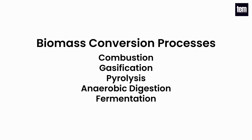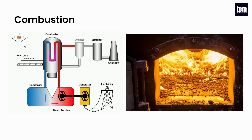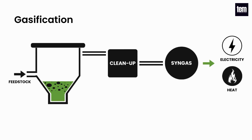The biomass feedstock must be converted to a useful energy form through one of many processes. Some common biomass conversion processes are combustion, gasification, pyrolysis, anaerobic digestion, and fermentation. Combustion is the process where biomass feedstock is burned in the presence of air or oxygen to release heat, and can also be used to heat steam for electricity generation. Gasification is the process of using heat, pressure, and partial combustion to convert the biomass feedstock into a combustible gas mixture called syngas or producer gas, which can then be used in place of natural gas for heating, electricity, and other uses.